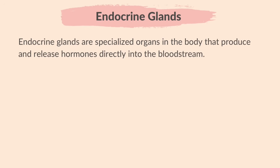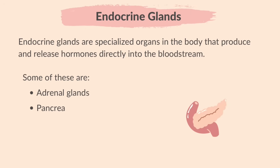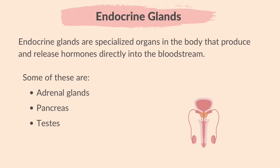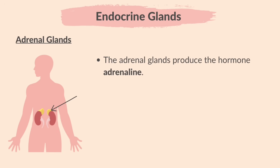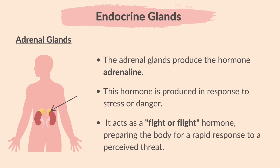Endocrine glands are specialized organs in the body that produce and release hormones directly into the bloodstream. Some of the glands you need to know about are the adrenal glands. The adrenal glands produce the hormone adrenaline, which is produced in response to stress or danger. It acts as a fight-or-flight hormone, preparing the body for a rapid response to a perceived threat.